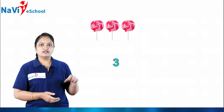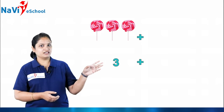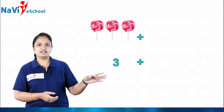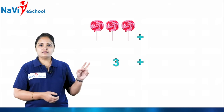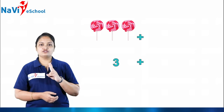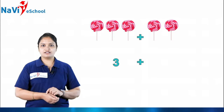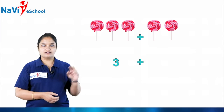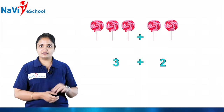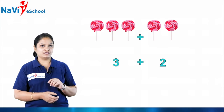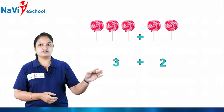Next comes the plus symbol. After the plus symbol, how many more candies are there? Two more candies. Draw them over there and write the number — two. So here we have three plus two.